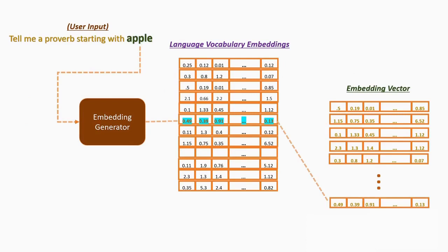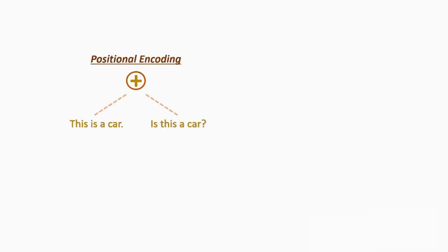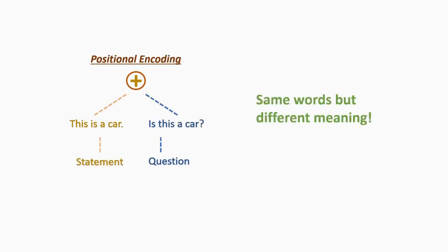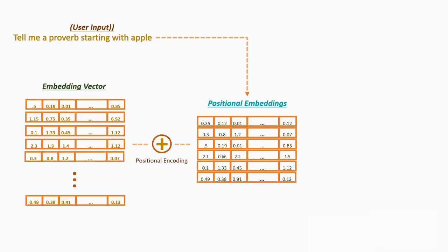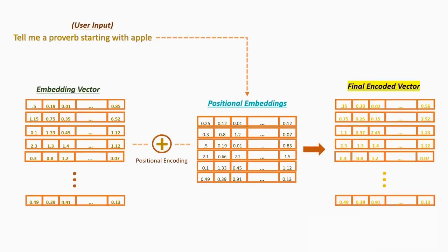But the process is still not complete. We need to positionally encode it. Here's an example to explain why we need to positionally encode the word embeddings. Consider these two sentences. They have the same words but have different meanings due to their word positions. So ChatGPT takes the word embeddings and positionally encodes them to create the final encoded vectors which retain their positional relevance.